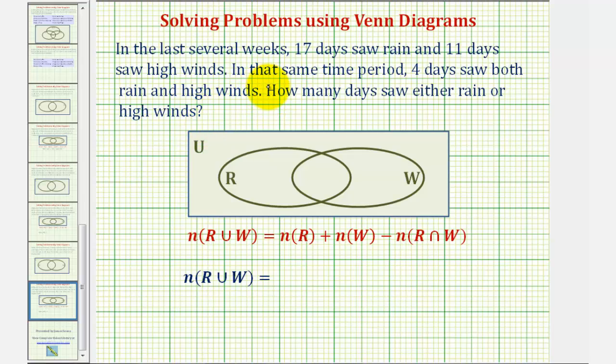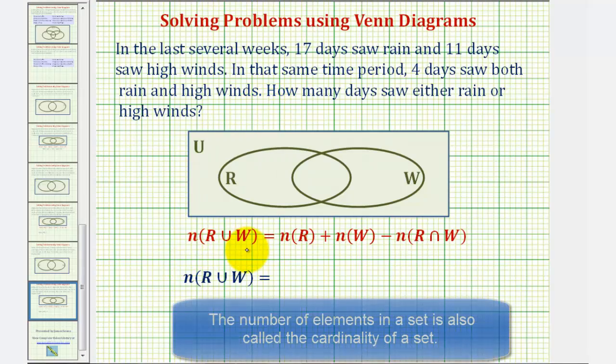We just solved this problem using a Venn diagram. This time, let's use a definition used to determine the number of elements in the union of two sets.